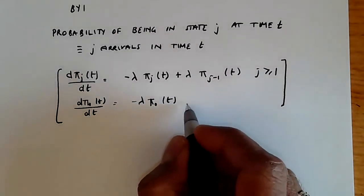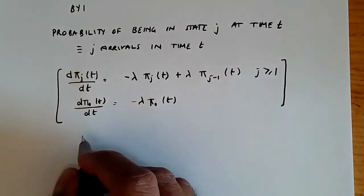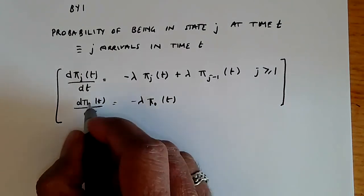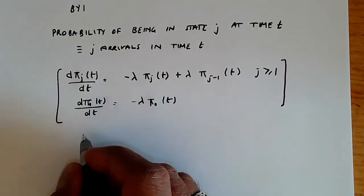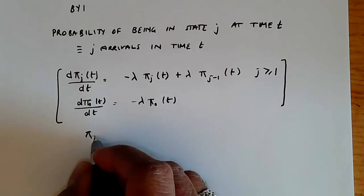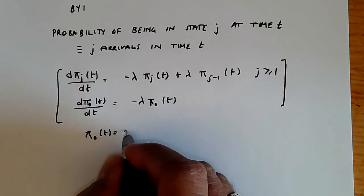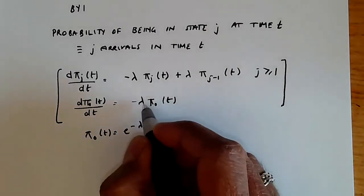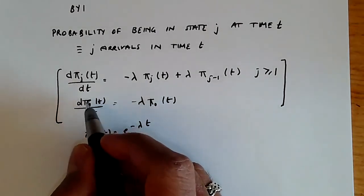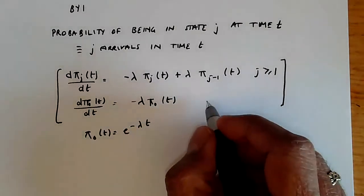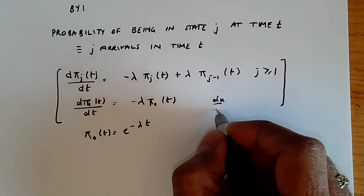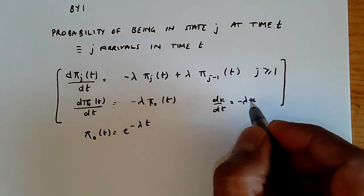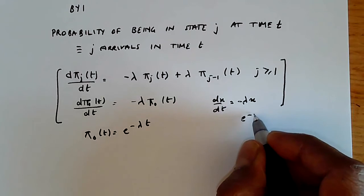The boundary condition equation is a straightforward differential equation, and the solution is simply π_0(t) = e^{−λt}. As you can see, it is of the form dx/dt = −λx, for which the solution is e^{−λt}.